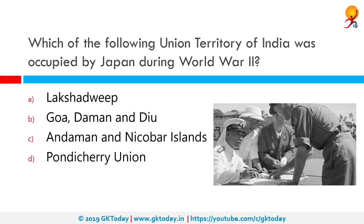Which of the following Union Territory of India was occupied by Japan during World War II? The correct answer is Andaman and Nicobar Islands. The Japanese occupation of Andaman Islands occurred in 1942 during World War II. Port Blair was occupied on 23rd March 1942.